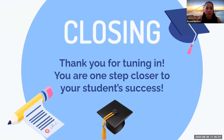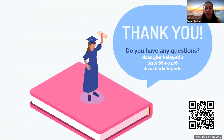Thank you so much for joining us today — you are one step closer to your student's success. If you have any questions, feel free to connect with us via email or phone. Our DCAC email is dcac@berkeley.edu and our phone number is 510-664-7276. If you'd like to visit our UC Berkeley Destination College Advising Corps website, scan the QR code on the bottom right of this slide. Thank you for tuning in and have a great rest of your day.